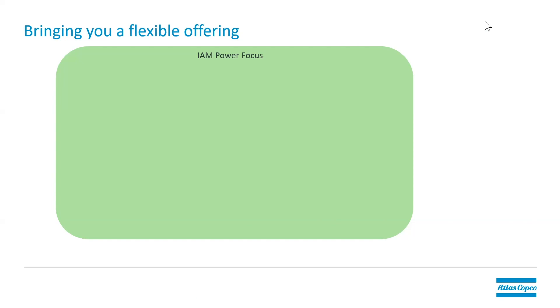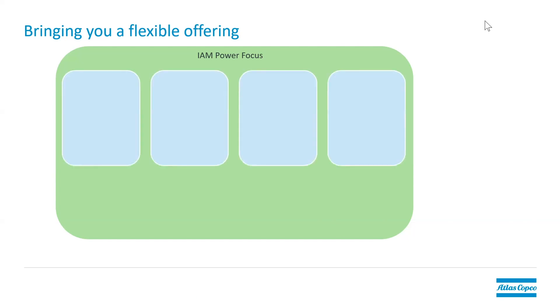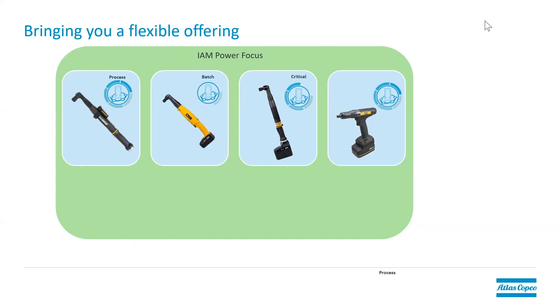Let's take a look at one scenario. If we look at the PowerFocus 6000 using the IAM PowerFocus, we have four virtual station types. My system here is configured with two process virtual station types, a batch virtual station type, and a critical virtual station type. You can see the initial investment varies based on what you need for those applications — I have a higher investment for my SRB battery tool using Tensor Pulse than I do with my BCV tool that only reports okay and not okay from a clutch battery tool.